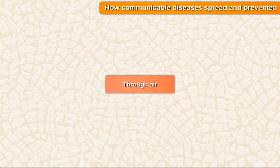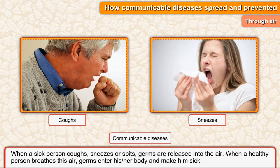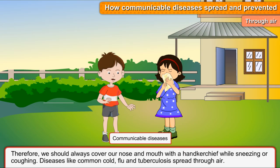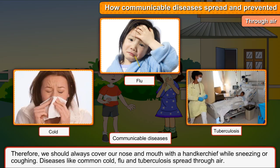Through air: When a sick person coughs, sneezes, or spits, germs are released into the air. When a healthy person breathes this air, germs enter his or her body and make him sick. Therefore, we should always cover our nose and mouth with a handkerchief while sneezing or coughing. Diseases like common cold, flu, and tuberculosis spread through air.